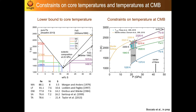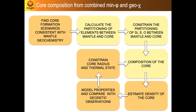Concerning core composition, we propose a combined mineral physics and geochemical approach. The idea is to model a core formation scenario consistent with mantle geochemistry, then use elemental partitioning between core and mantle to constrain the nature and abundance of light elements in the core. We can then estimate core density and compare properties directly with geodetic observations, constraining core radius and thermal state, and iterating back to core composition in a self-consistent way. Starting from a core formation model, the classic approach is to reproduce the siderophile element pattern — the abundance of elements in the bulk silicate portion of the planet, normalized to the reference meteorite, as a function of condensation temperature. Siderophile elements — those with chemical affinity for iron — are depleted because they are sequestered in the core during core-mantle differentiation. The amount of depletion depends on element partitioning, which depends on pressure, temperature, and redox conditions during differentiation.